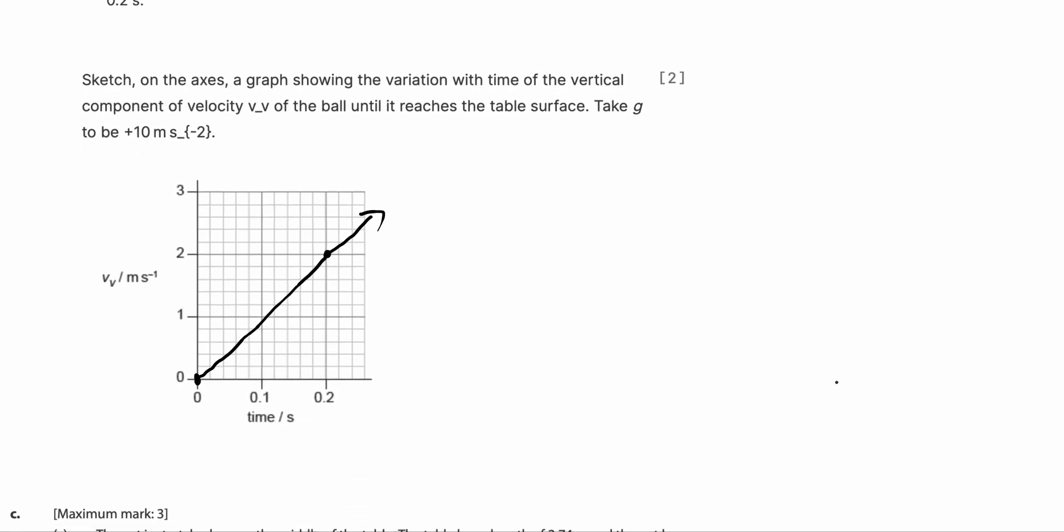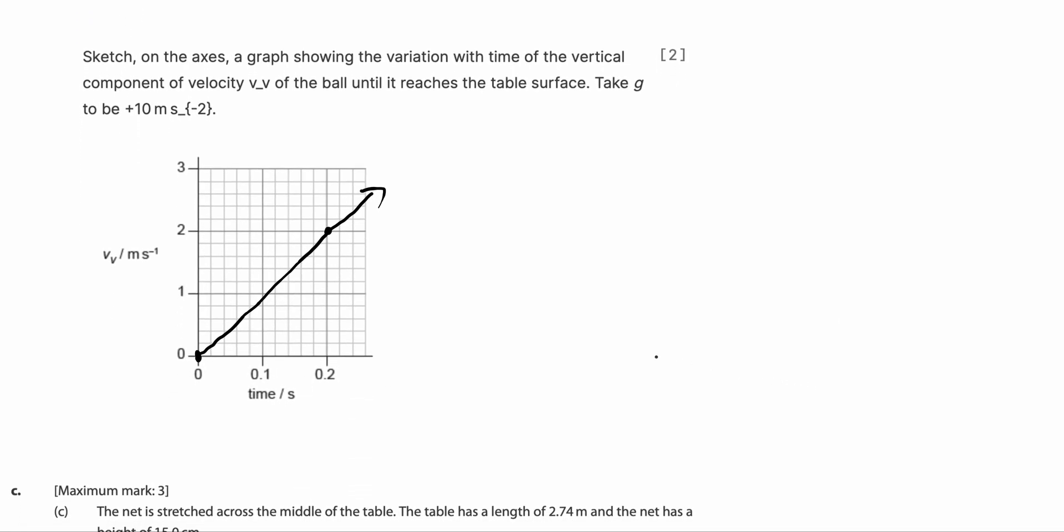Next, sketch on the graphs the variation with time, the vertical component of velocity. How do we do this question? We know that there is no initial vertical velocity the moment it's launched. But as the motion proceeds, it gains vertical velocity due to acceleration due to gravity.